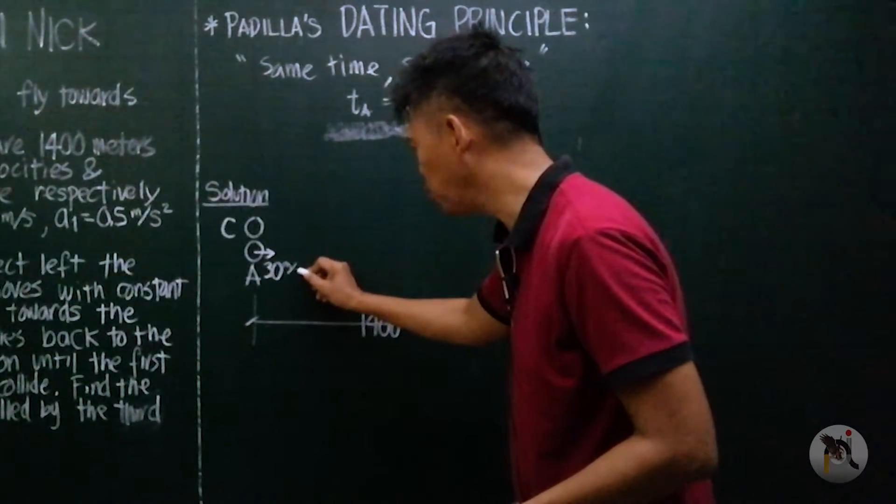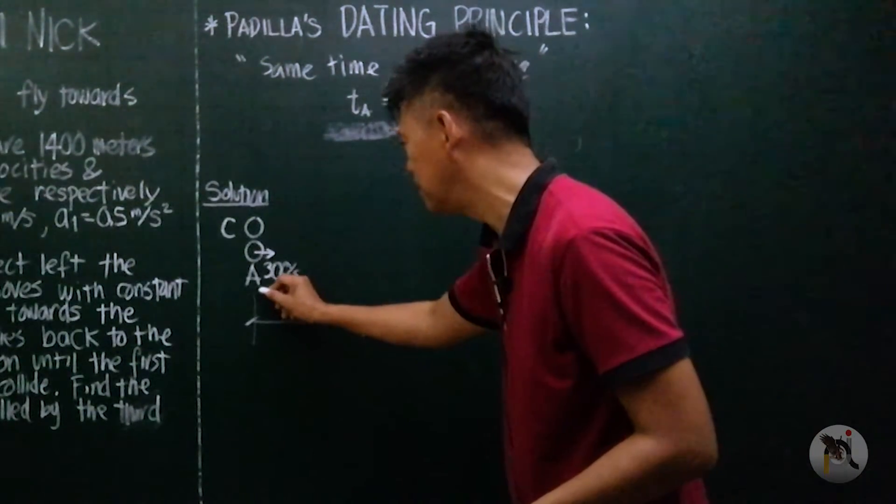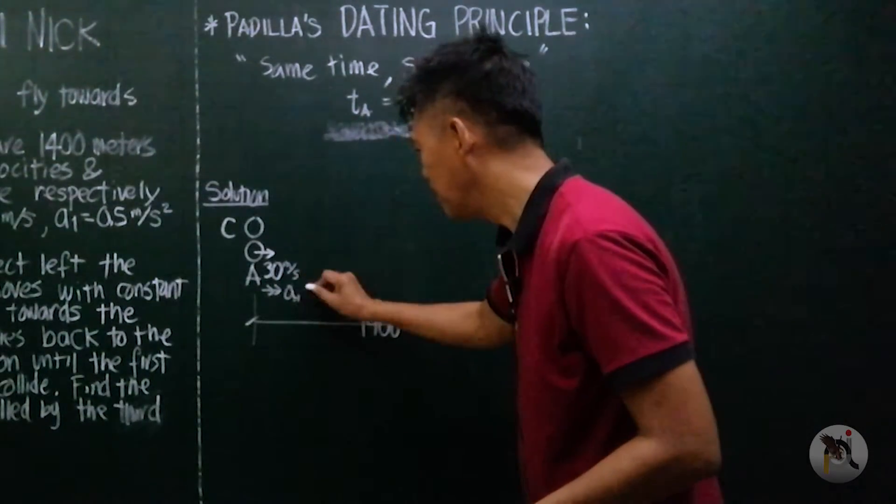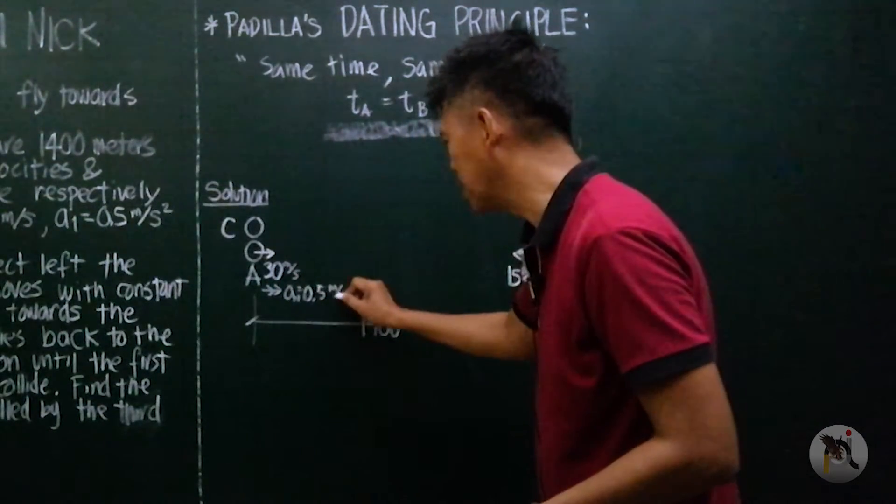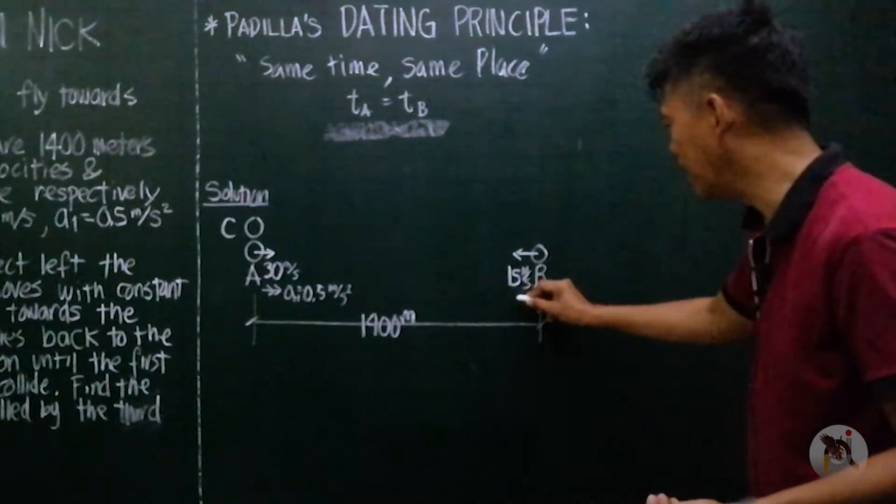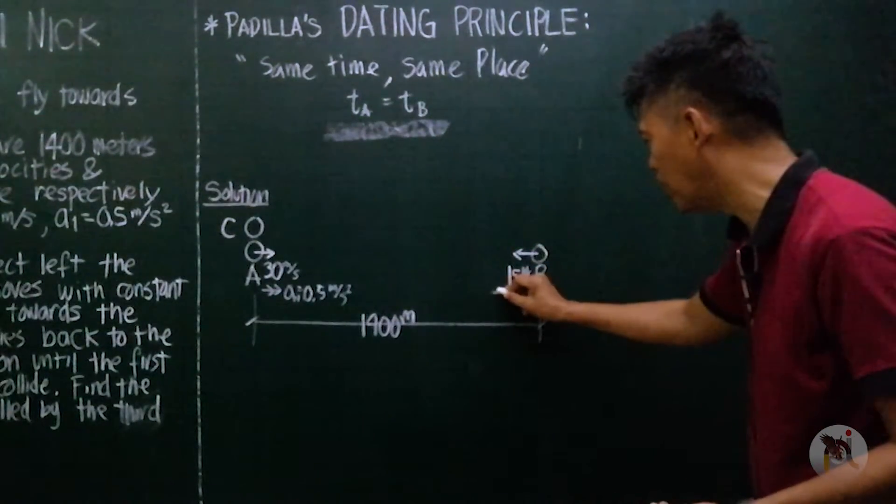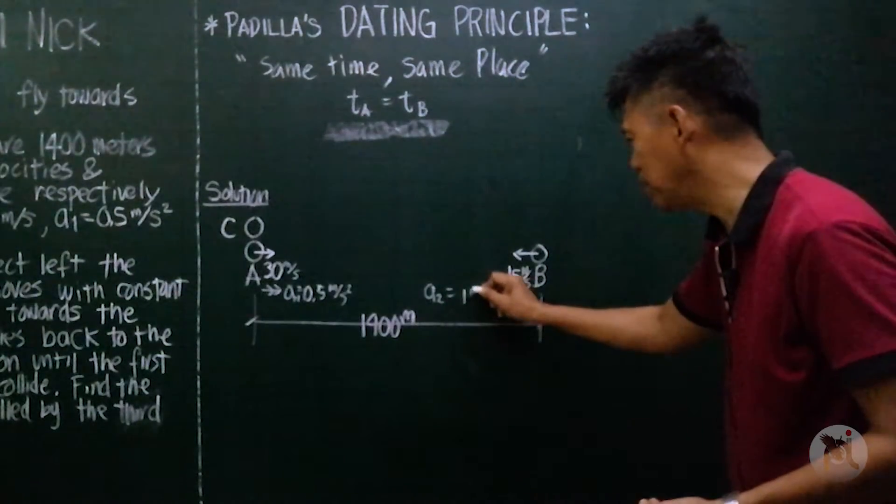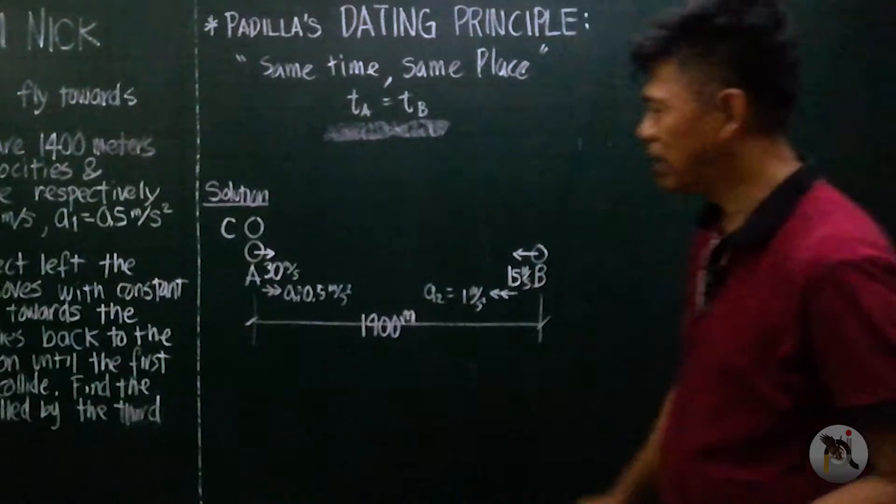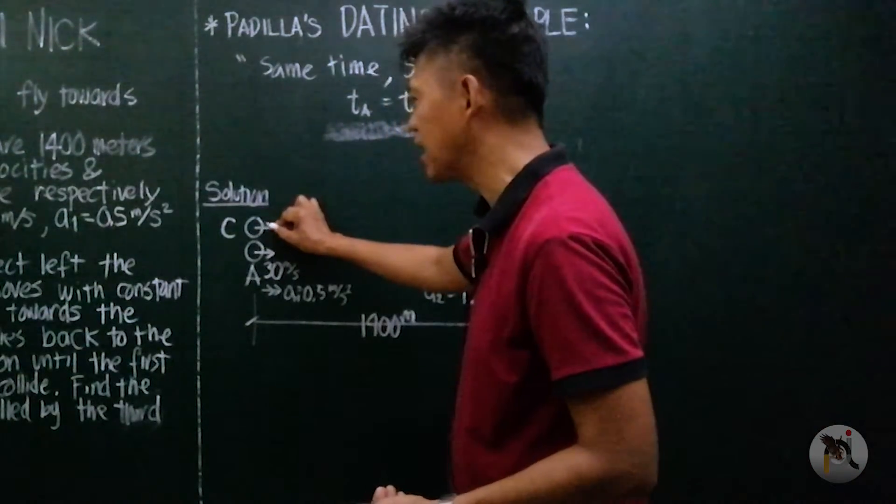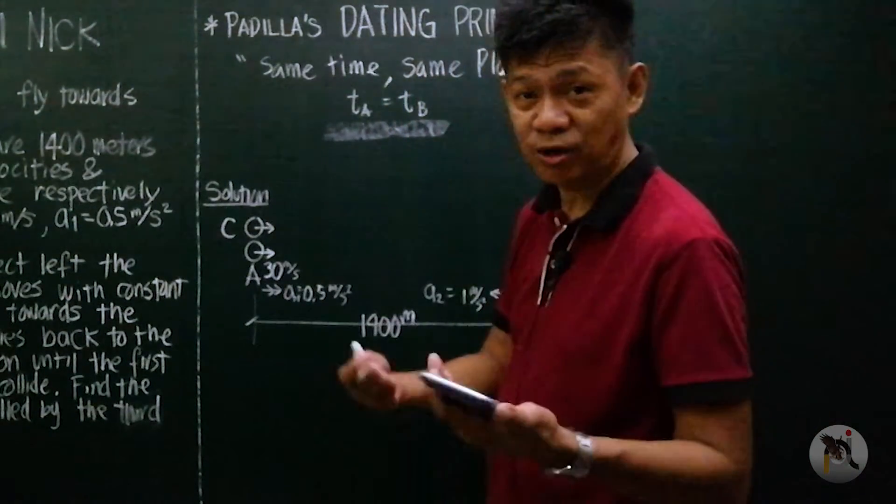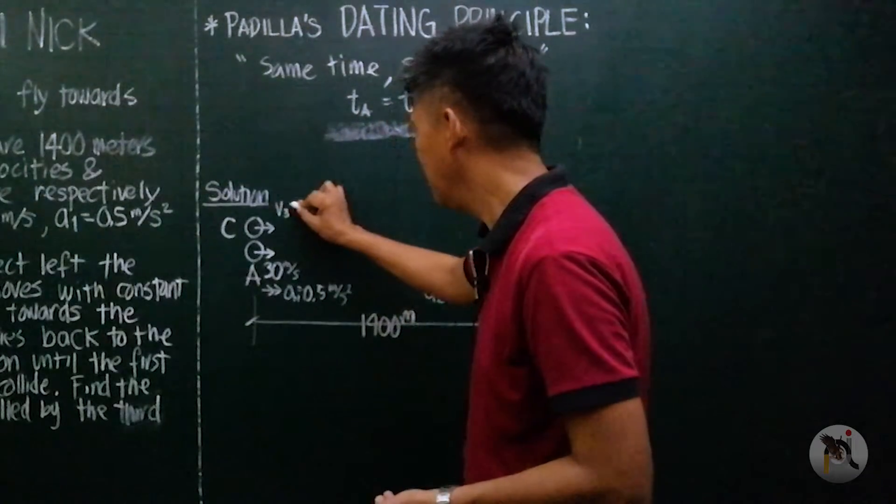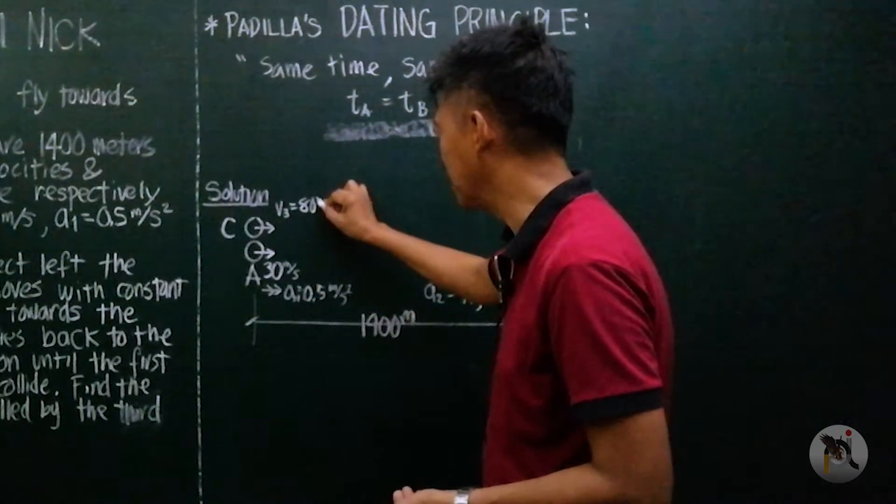And this is with acceleration of 0.5 meters per second squared, while this has an acceleration of 1 meter per second squared. But this one is moving at a greater velocity but constant one, which is 80 meters per second.